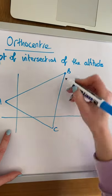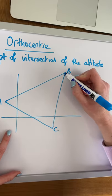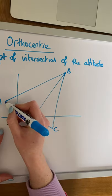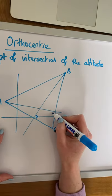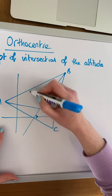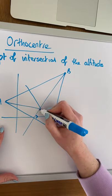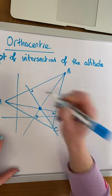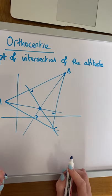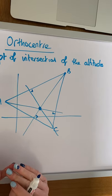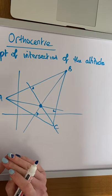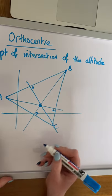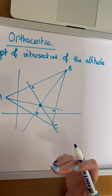Looking at our triangle ABC, we construct one altitude here, one altitude here, and our final altitude results in the orthocenter — the point of intersection of the altitudes of a triangle. We do need to be able to find it both algebraically and graphically.